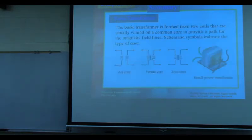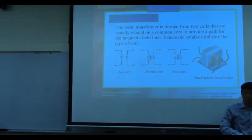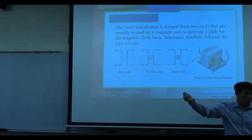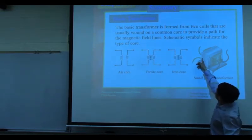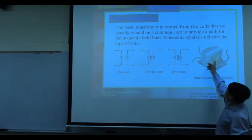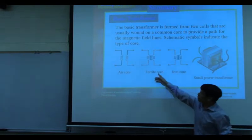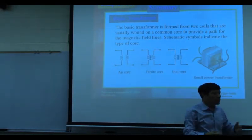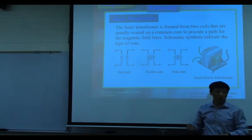Looking at the transformer, we have two coils. The first one on the left-hand side is called the primary, and the second one on the right-hand side is called the secondary. You can actually switch which side is used as input or output, but usually it is labeled, so we use it based on the label.